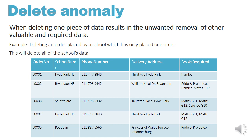In a delete anomaly, deleting one piece of data results in the unwanted removal of other valuable and required data. Hyde Park High School has placed two orders, so if we delete their first order L0001, it's not a problem because they still have all their data on the database. But if we delete L0002, Bryanston High School's order, they don't appear on the database again — we have lost all of their data, including their phone number and delivery address. That is a delete anomaly, caused by a poor database design.